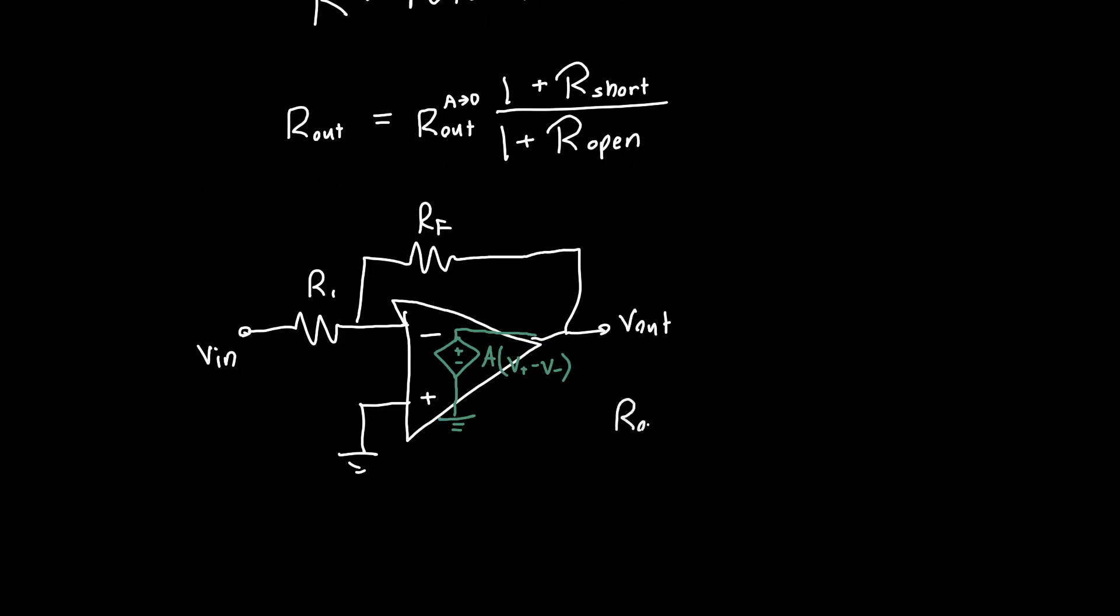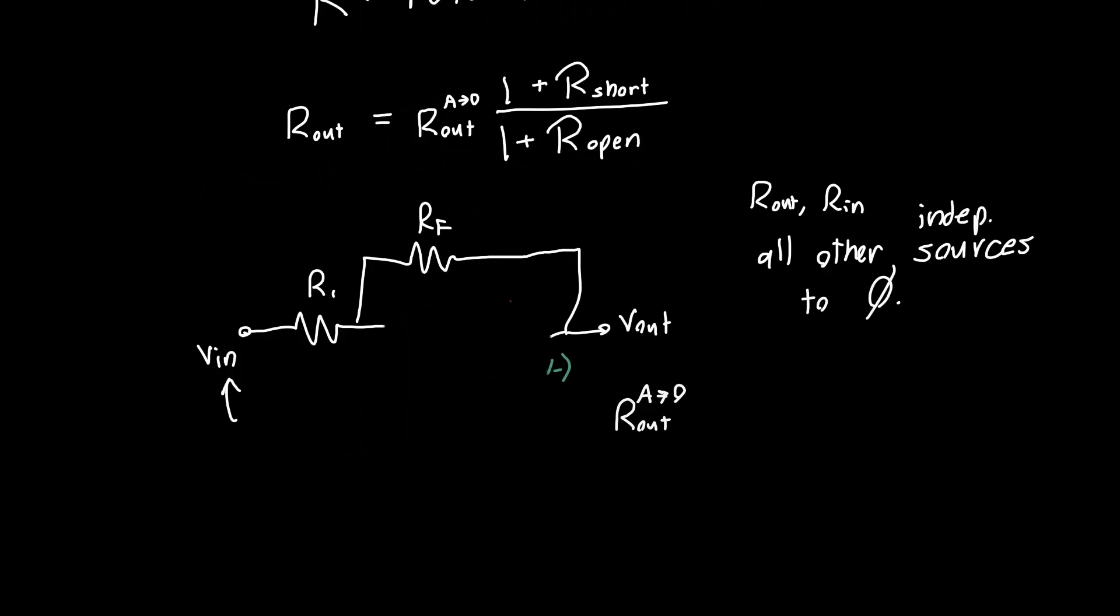So first of all, what's the output resistance with the gain set to zero? Well, then we just don't have to worry about this dependent source. We can just erase it. Let's erase this entire part of the amplifier, the whole amplifier. Now you might say, what do we do with this V in? What do we generally do when calculating output impedances or input impedances? We set all other independent sources to zero. So voltage sources become a short, current sources become a ground. So don't worry about this V in, this guy just gets connected straight to ground.